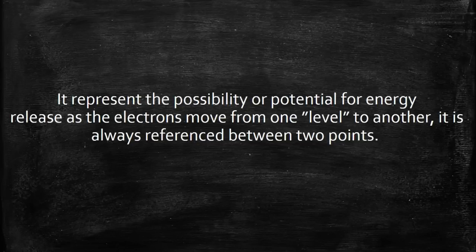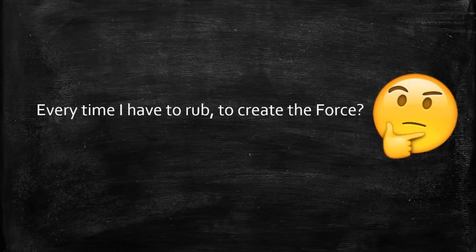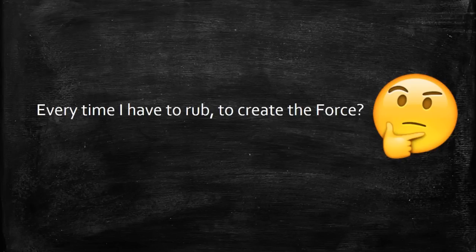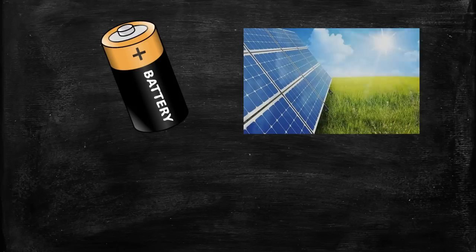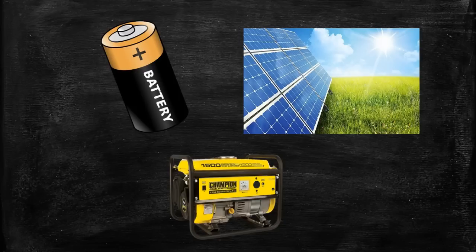One more question can arise: do I have to rub to create the force every time? The answer is luckily no, because there are some other sources that can create the imbalance like battery, solar cell, and generators and many other things that can create the imbalance or that have voltage. So this is all about voltage. Now what about the current?